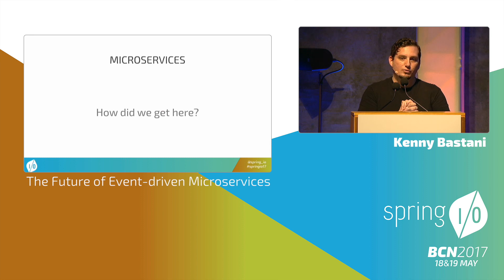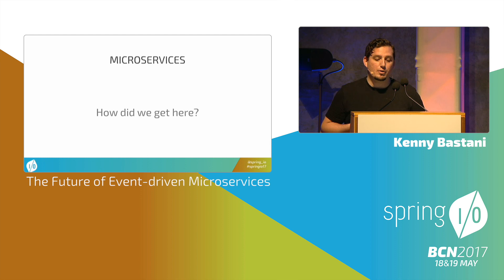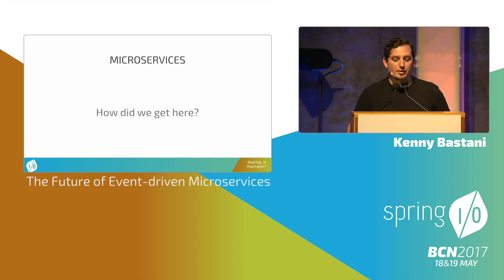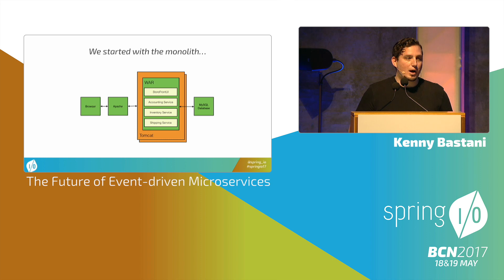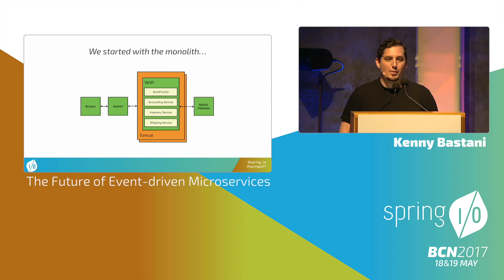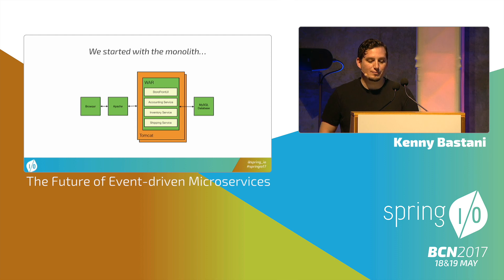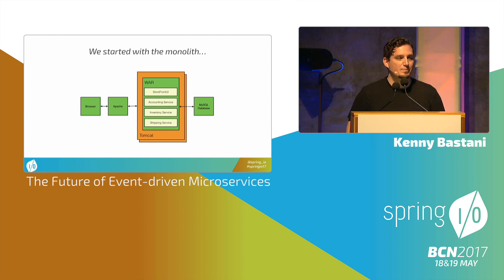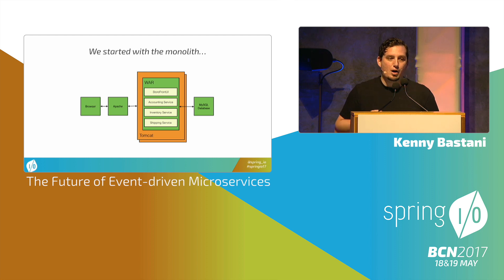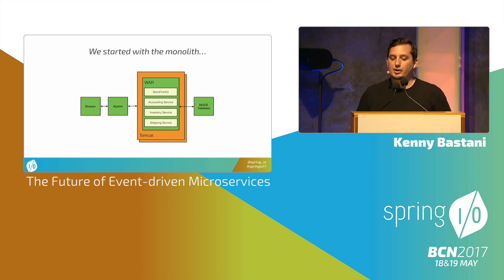Today we're going to talk about event-driven microservices, and we're going to start by tracing the history from the monolith. So we started with the monolithic application. Here we see an Apache Tomcat server with a WAR deployment. In that WAR deployment, I have a storefront UI, an accounting service, inventory service, and a shipping service. I have modularity in this application, but the key problem is that if I change any one of these components, I have to deploy the entire thing to production.